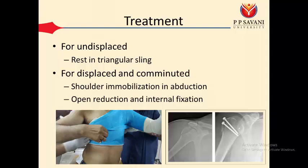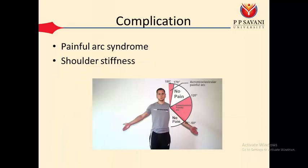The second treatment option is open reduction and internal fixation for cases of moderate to higher displacement — a screw is fixed and immobilization is given for three to four weeks. A common complication is painful arc syndrome, in which the patient feels pain during shoulder abduction, particularly in the range of 60 to 120 degrees. The major cause is the reduced space between the coracoacromial arch and the greater tuberosity.